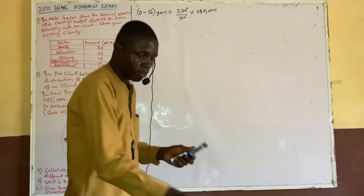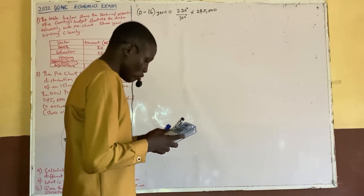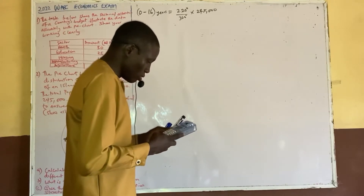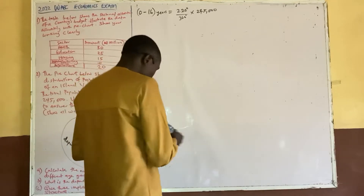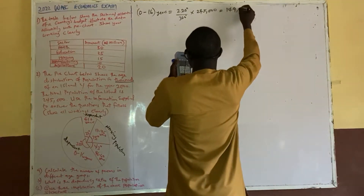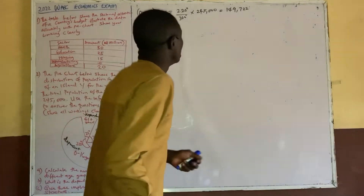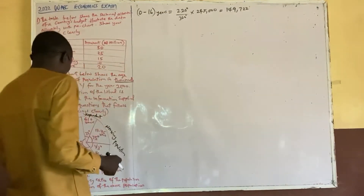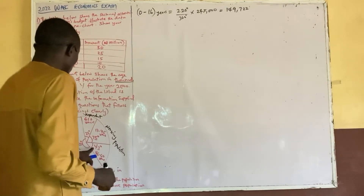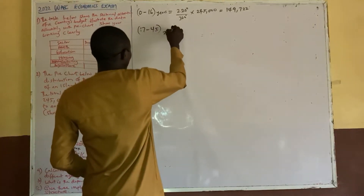So we have 245,000. That gives us approximately 149,720 persons. So that's the age group 17 to 45, which gives us 149,720.